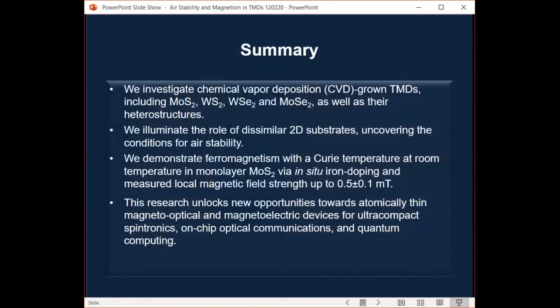So, in summary, we synthesize and characterize TMDs, including molybdenum disulfide, tungsten disulfide, tungsten diselenide, as well as their heterostructures. And we illuminated the role of dissimilar 2D substrates uncovering the conditions for air stability, and we demonstrate ferromagnetism with high Curie temperature. And we furthermore measure the local magnetic field strength up to 0.5 millitesla. Here, this magnetic field 0.5 millitesla, this strength is too weak to collect even a paper clip using it. But it is strong enough to alter the spin of the electron. That means this research therefore paves a way to create new opportunities towards atomic scale thin magnetic optical and magnetic electric devices for ultra-compact spintronics, on-chip optical communications, and quantum computing in the future.